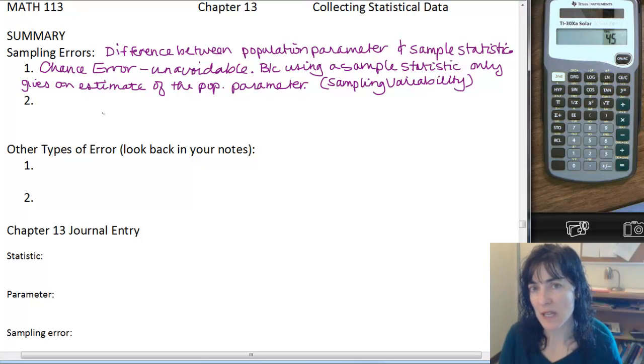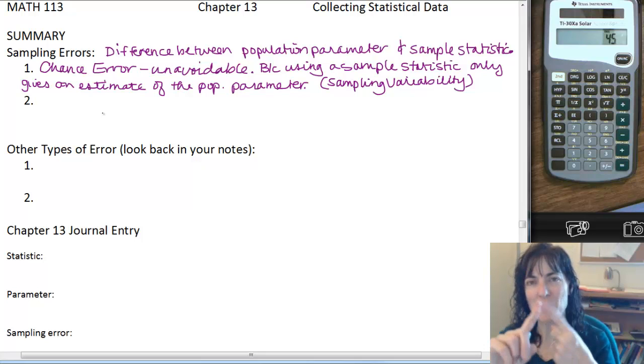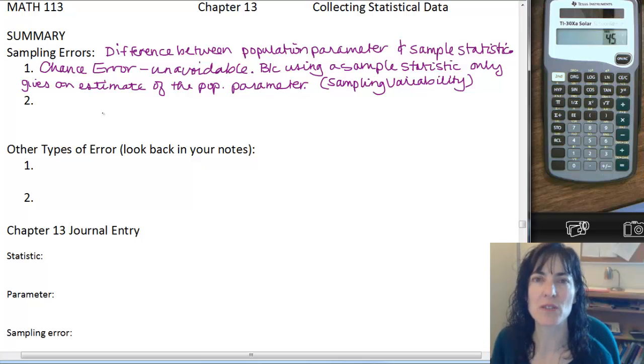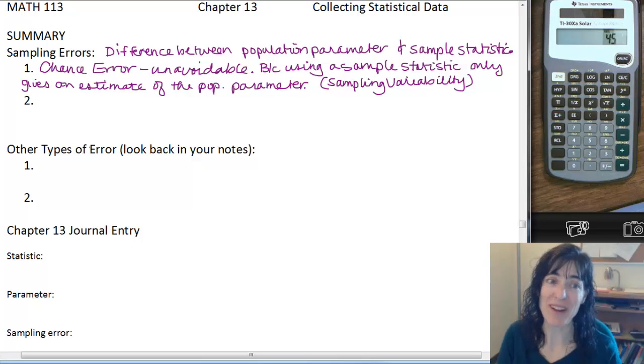And remember which types of studies are likely to give us only chance error? The ones with random sampling. So random sampling and stratified random sampling are likely to result in chance error.